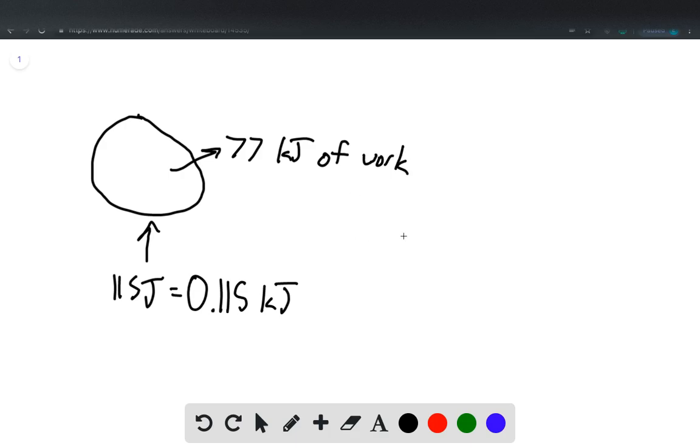So we can use the first law of thermodynamics, delta E internal equals Q minus W. Our Q is 0.115 kilojoules, and our W is 77 kilojoules.